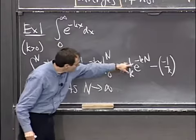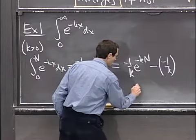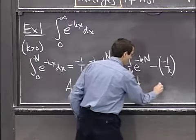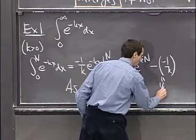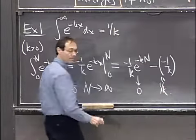So this is, if you like, e to the minus infinity in the limit, which is 0. And so in the limit, this thing tends to 0, and this thing is just equal to 1 over k. And so all told, the answer is 1 over k. And that's it.